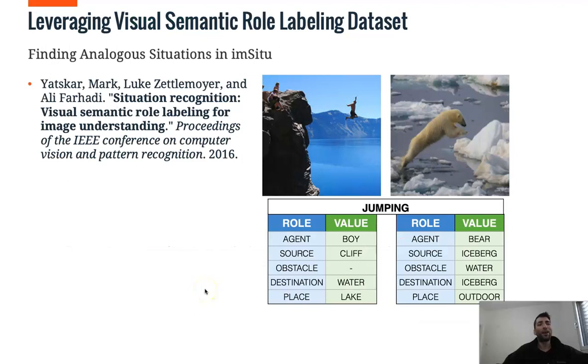Now let's see how we generated this data set. We leverage visual semantic labeling data set, visual SRL. So we take IMSIS from the paper, Situation Recognition, Visual Semantic Role Labeling for Image Understanding, where they describe role annotations for each image.